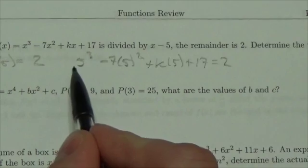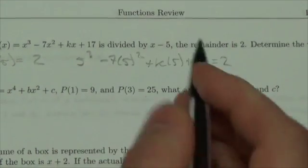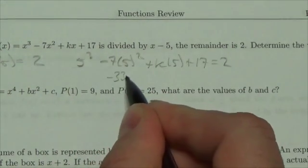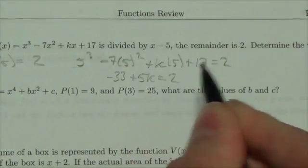So, these three terms, this one, this one, and this one, are going to get me negative 33 plus 5 times k is equal to 2.